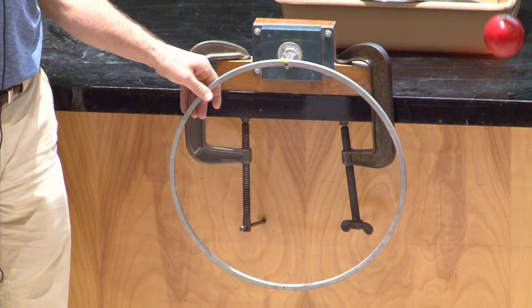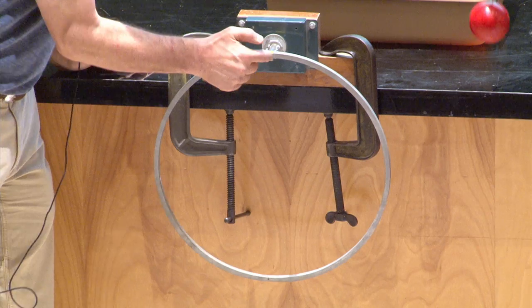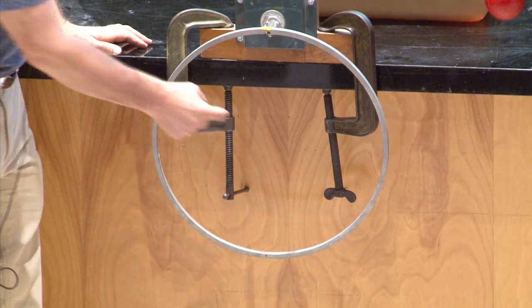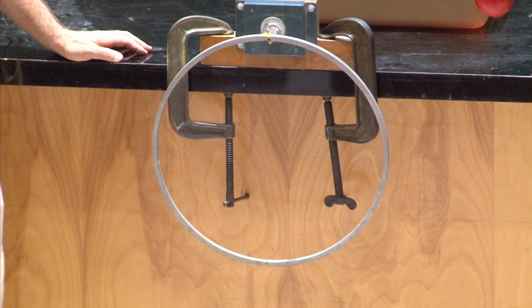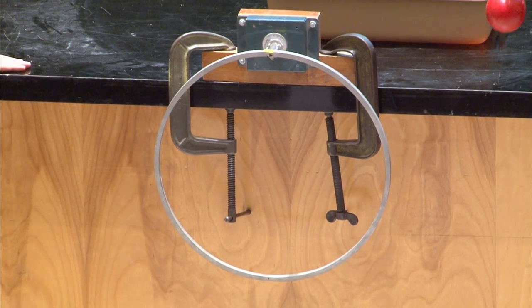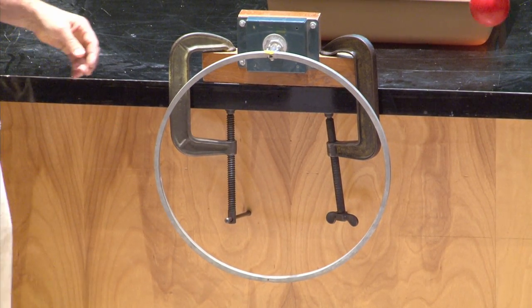Equilibrium is when the center of mass is directly below that. In other words, the center of this circle is directly below the fulcrum. Then it's an equilibrium point. There's no net torque on it.